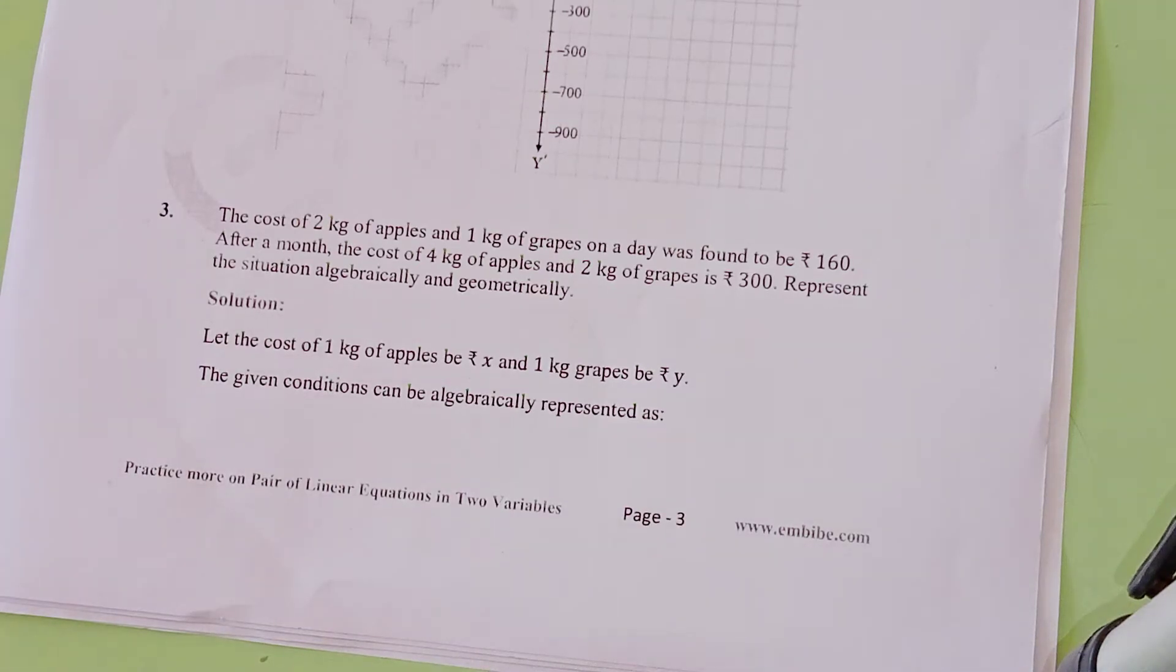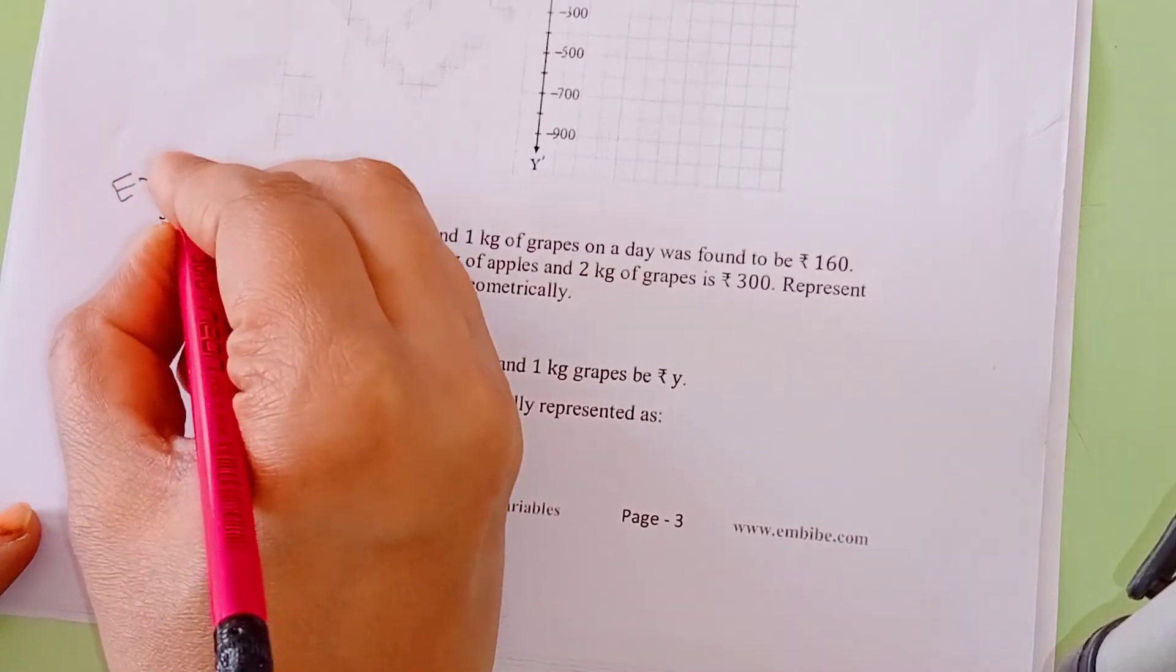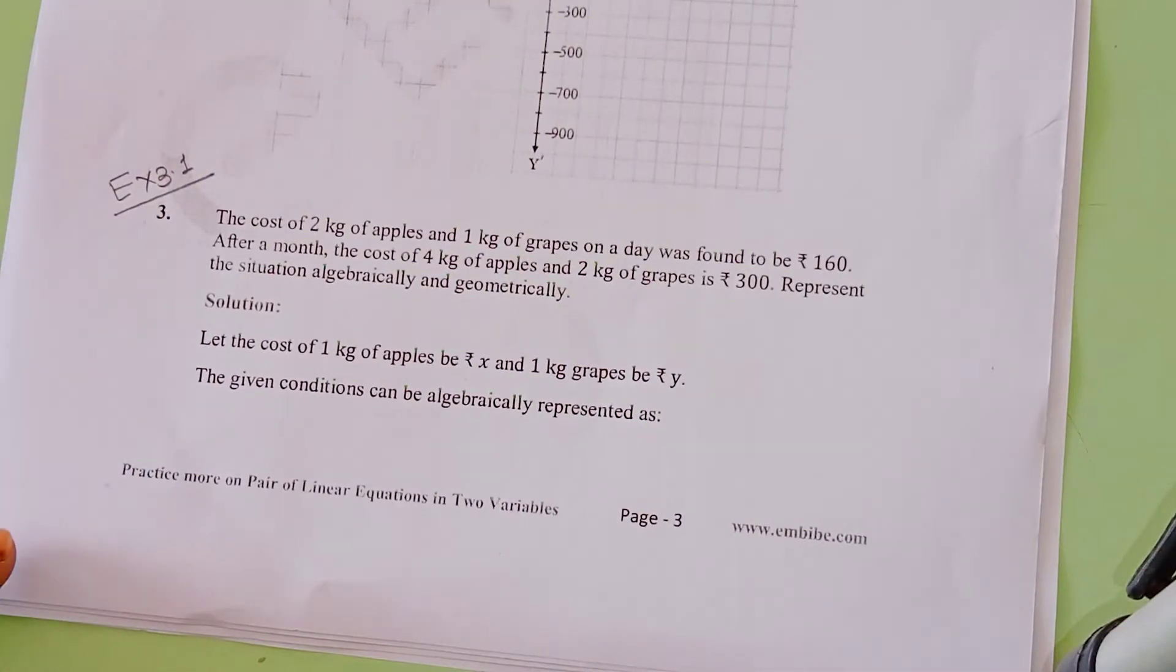Hello dear students, now we are going to solve Class 10th Mathematics, NCERT book Exercise 3.1, Question Number 3. The name of the chapter is Linear Equations in Two Variables.